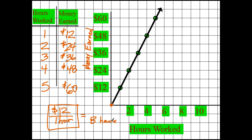If I work eight hours, I do eight times one for the hours, so I do eight times twelve for the money. Twelve times eight is ninety-six. So I would make ninety-six dollars. That's another one we could probably find on the graph — it's not quite going to work on this particular graph, but on some of the other ones you make, you will get to that point.